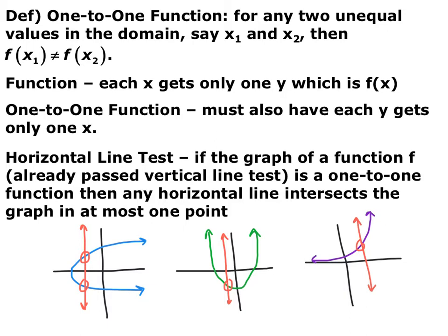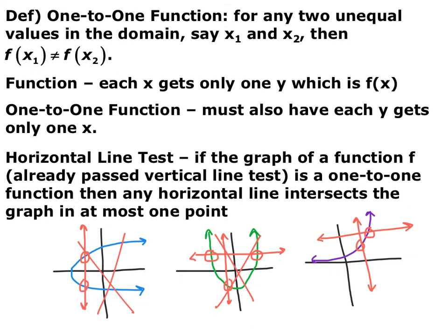This first graph fails the vertical line test, so it's not a function at all. The second two graphs both pass the vertical line test, so they're both functions. But this parabola fails the horizontal line test because multiple y-coordinates show up more than once — so it's a function, but not a one-to-one function. Versus this exponential function: if I draw a horizontal line, it only ever crosses the graph in one place, so it is a one-to-one function.